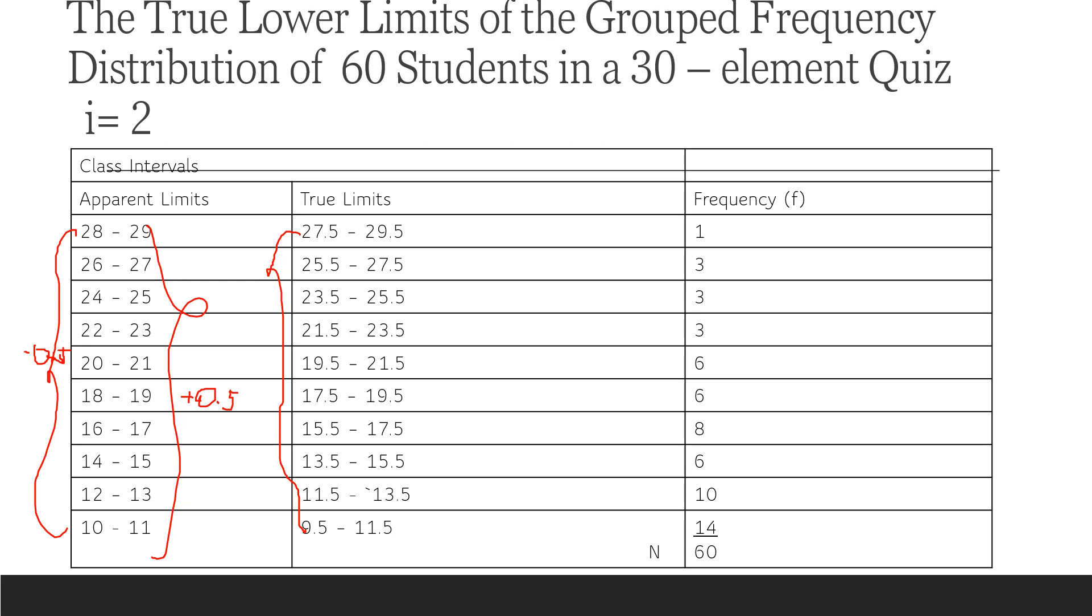Here we add, so 29 plus 0.5 is 29.5, 27 plus 0.5 is 27.5—so tama lahat yan. Then 23 plus 0.5 is 23.5—correct. Now 21.5, 19.5, 17.5, 15.5, 13.5, 11.5, and 9.5. So tama, ok. Question next.